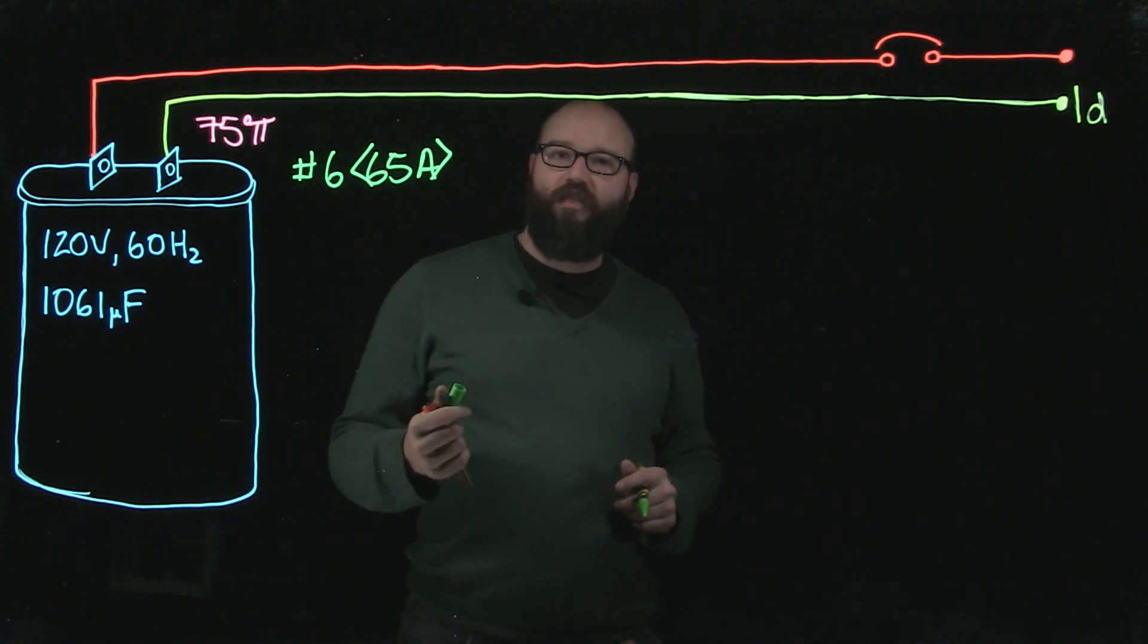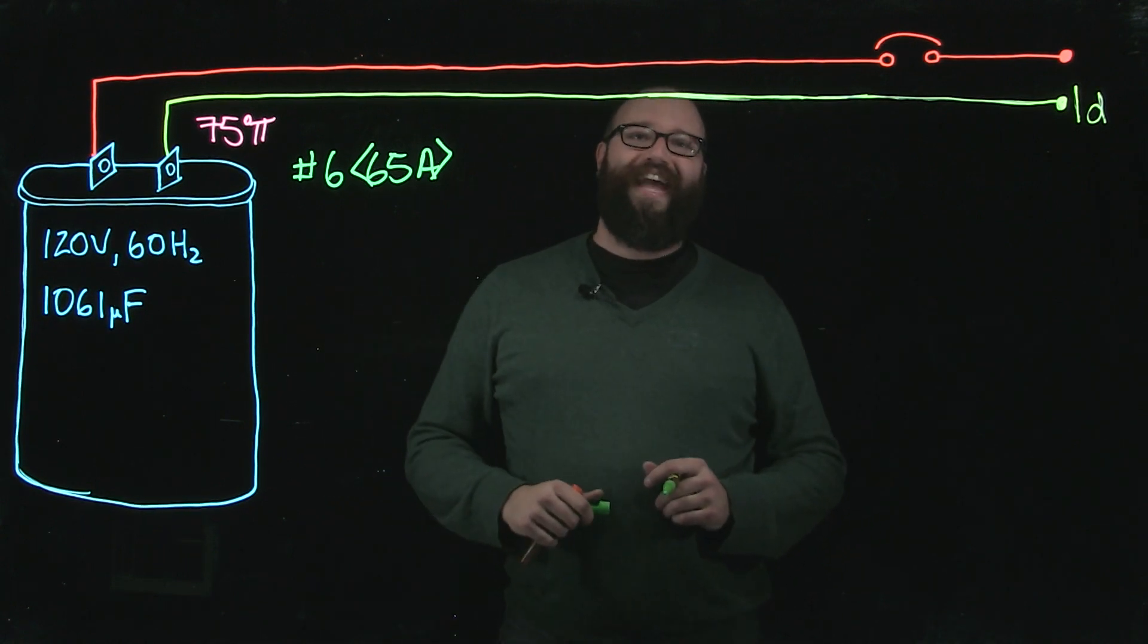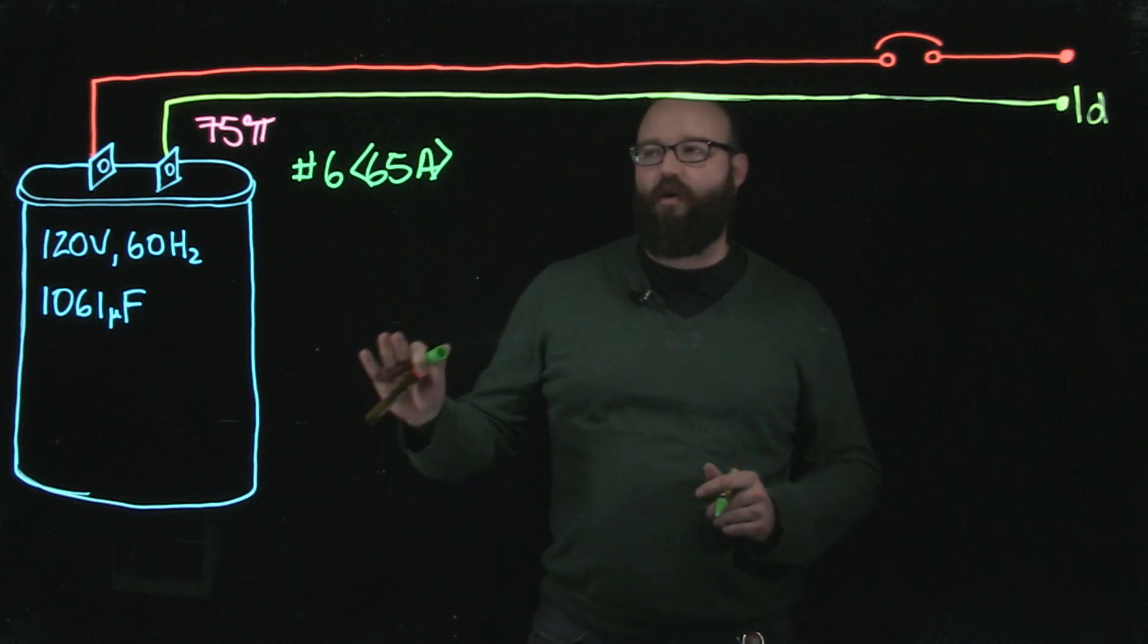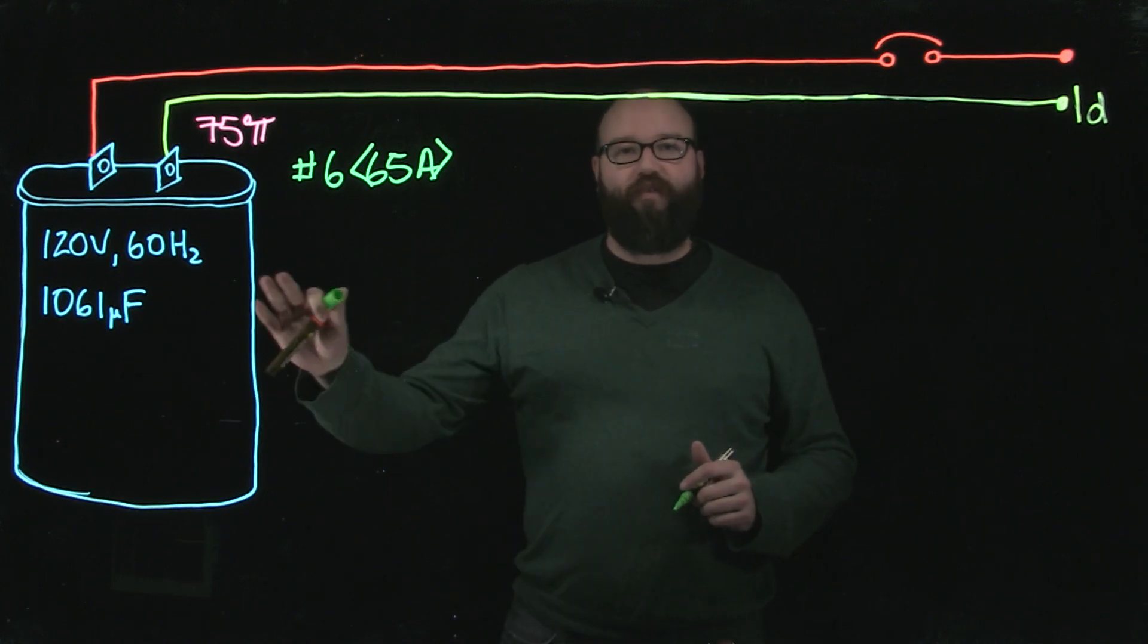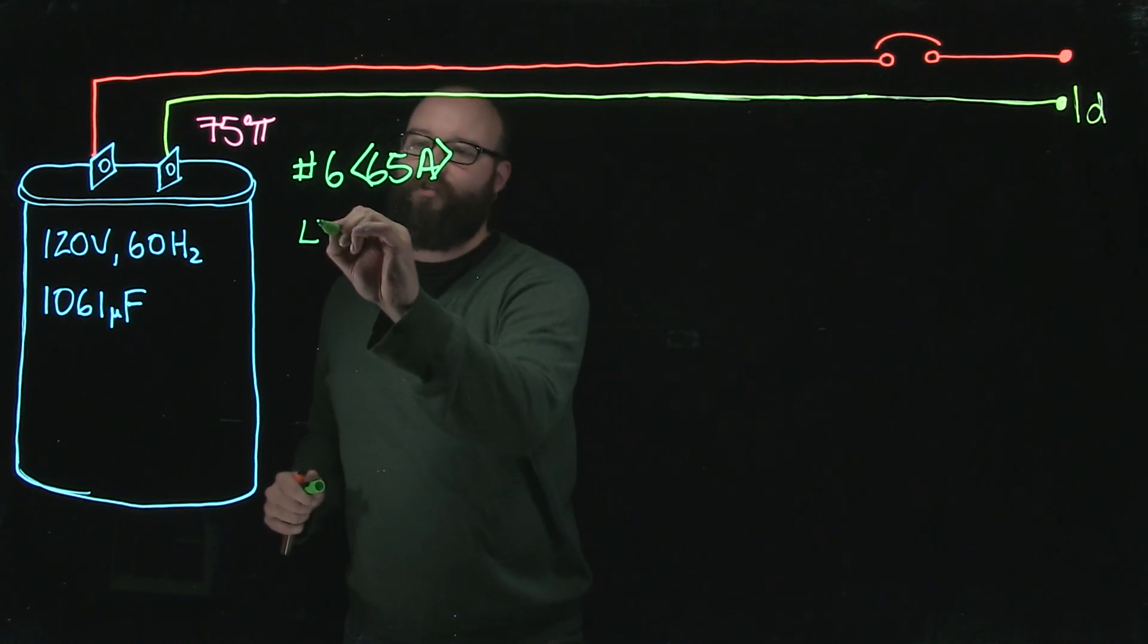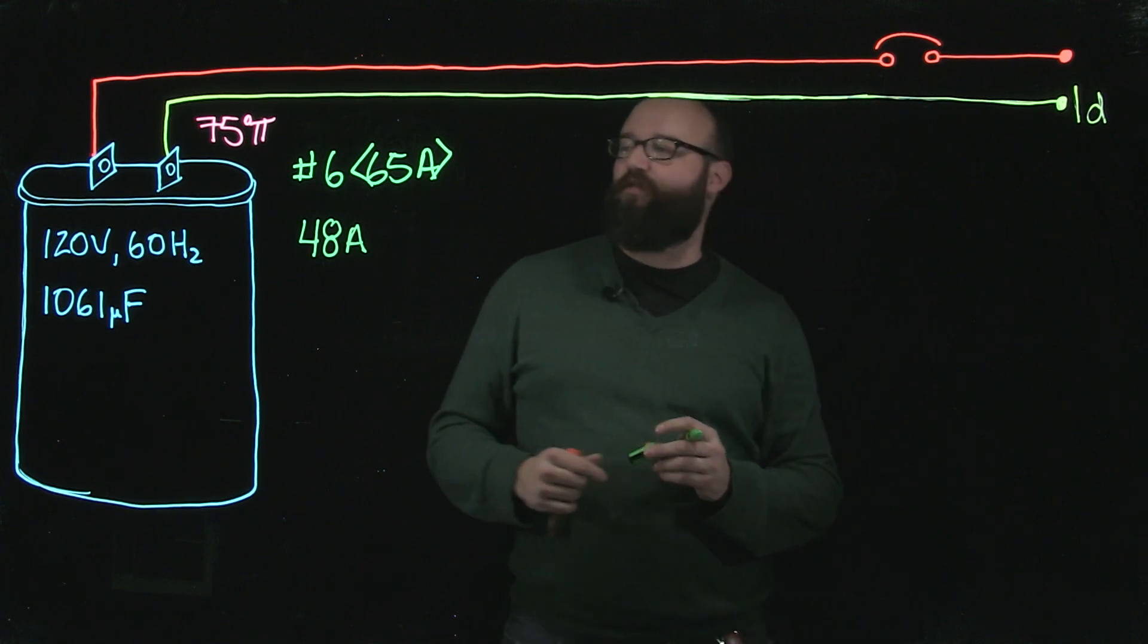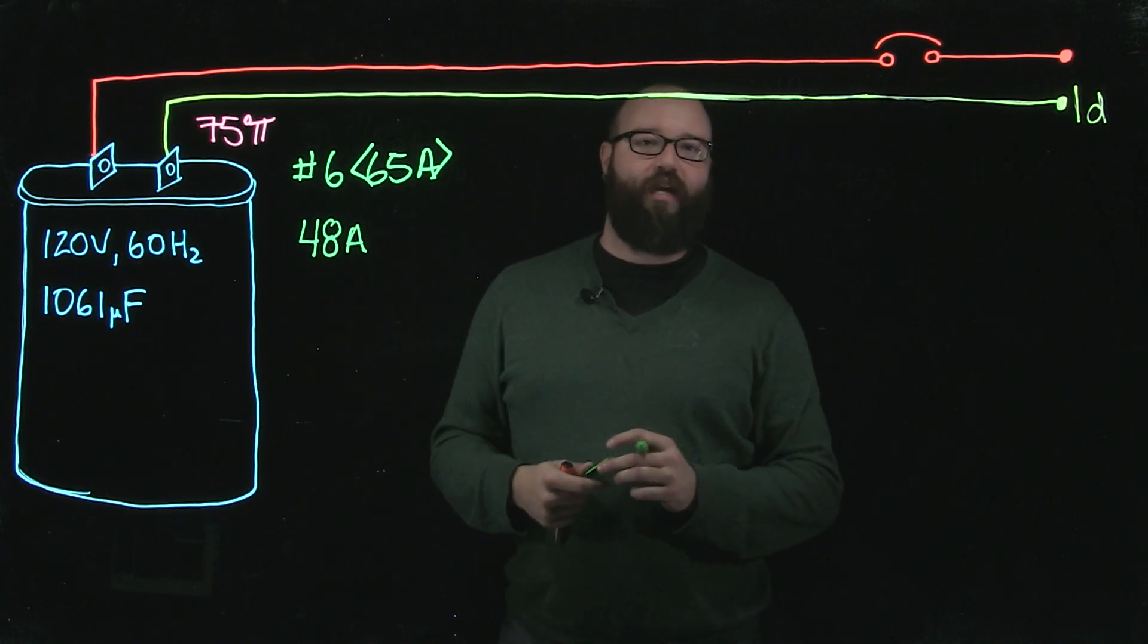Section 26 in the CEC tells us that our overcurrent shall not exceed 250% of the rated current of this capacitor. In the previous video, we figured out that this was a 48 amp capacitor, that's the magic number that we're going to use for every calculation dealing with this capacitor.